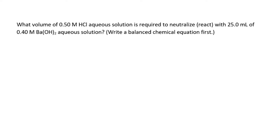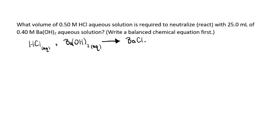First, write a balanced equation: hydrochloric acid aqueous plus barium hydroxide aqueous. The products are barium chloride plus two water molecules. To balance this, put a two in front of the hydrochloric acid — you have four hydrogens, two chlorines, one barium — and that balances everything out.